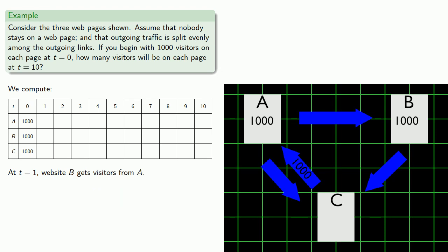Also at t = 1, website B is going to get its visitors from A. But since there are two outgoing links from A, the 1,000 visitors on A will split into two equal parts, so that B only gets half, 500 visitors.